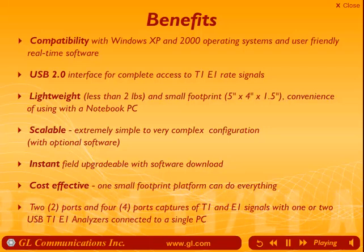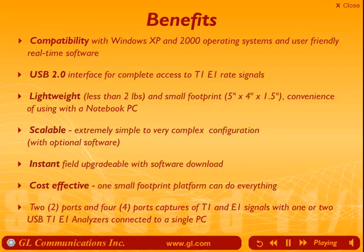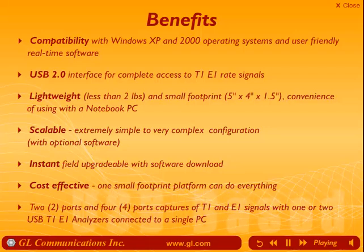Benefits, in summary: compatibility with Windows XP and 2000 operating systems; user-friendly real-time software; USB 2.0 interface for complete and full access to T1 and E1 rate signals; lightweight — less than 2 pounds; small footprint — 5 inches by 4 inches by 1.5 inches; convenience of using with a notebook PC; scalable, with extremely simple to very complex configurations possible with optional software; instantly field upgradable with software downloads; cost effective — one small footprint platform capable of everything; and two-port and four-port captures of T1 and E1 signals with one or two USB T1E1 analyzers connected to a single PC.